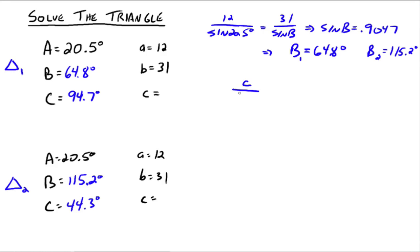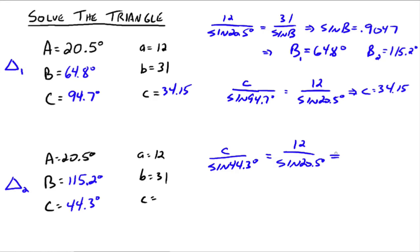So c over the sine of 94.7 degrees is equal to 12 over the sine of 20.5 degrees. That implies that c is equal to 34.15. Then down here we have little c over the sine of 44.3 degrees is equal to 12 over the sine of 20.5 degrees, which implies that little c is equal to 23.93. And there are your two triangles.